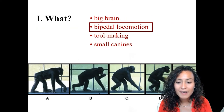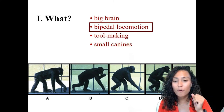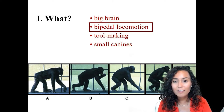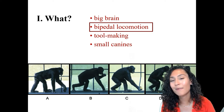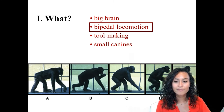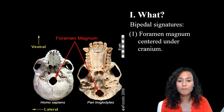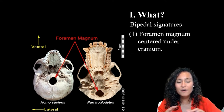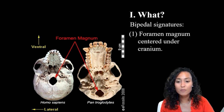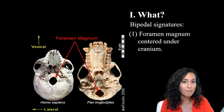Today we're going to focus particularly on this idea of bipedal locomotion and talk about what it is, when, and why we developed this ability to walk on two feet. There are several core anatomical features that characterize our ability as humans to walk on two feet, and I'll talk briefly about six of these major ones today.